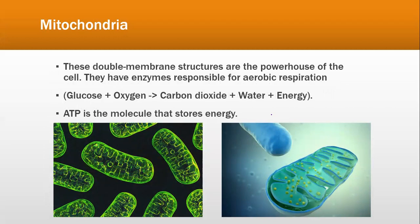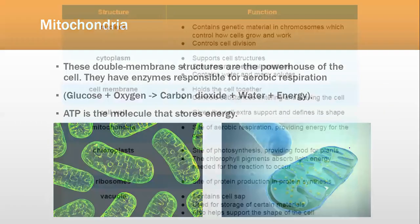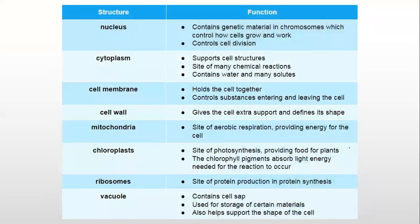Mitochondria will be covered in a separate chapter on respiration, where we'll discuss aerobic and anaerobic respiration. Mitochondria is known as the powerhouse of the cell because it provides energy to the cell. Mitochondria have their own enzymes which help in aerobic respiration, where glucose and oxygen are the reactants: C₆H₁₂O₆ + 6O₂ → 6CO₂ + 6H₂O + energy. The energy is released in the form of adenosine triphosphate (ATP), which is the cell's energy currency or energy-carrying molecule. This is the table you can refer to for the overall function of each and every organelle.